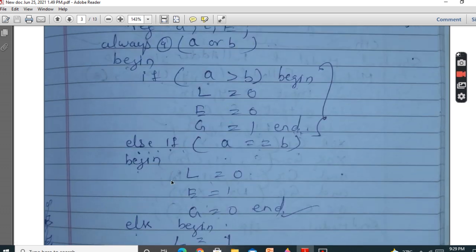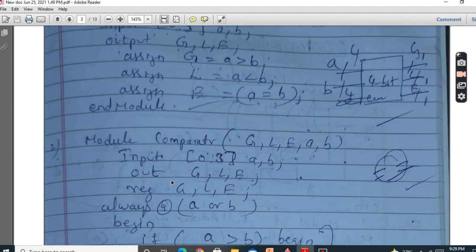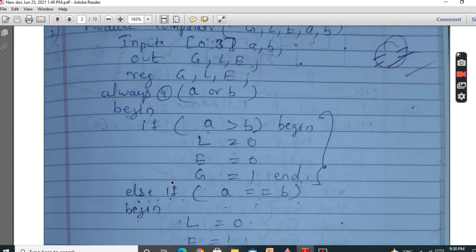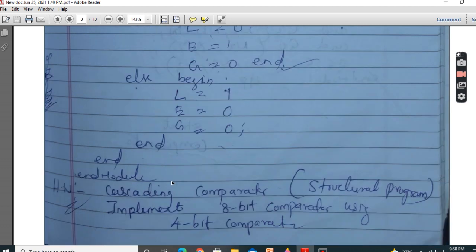So these are the two models, how to write comparator. Third model is to try this, how to cascade, that is structural models.